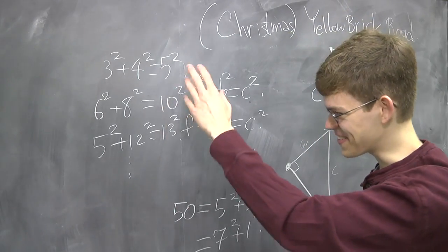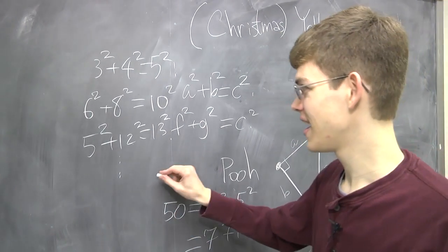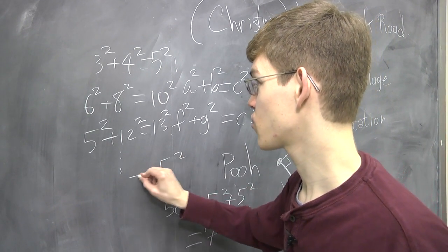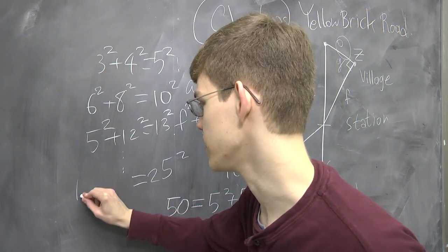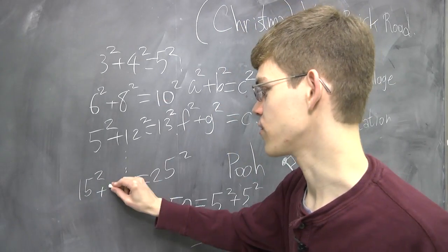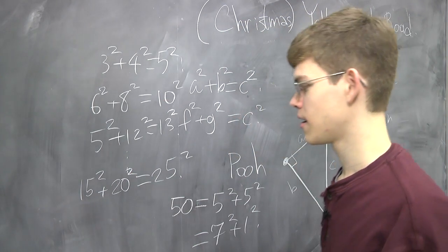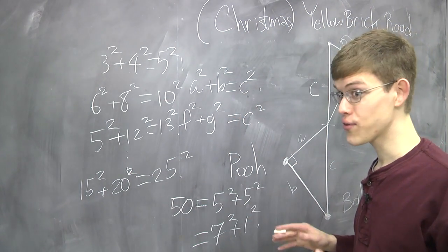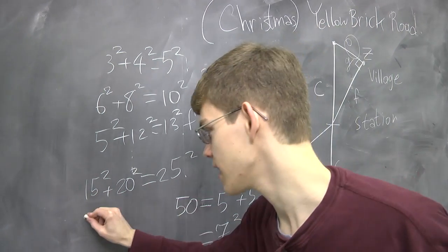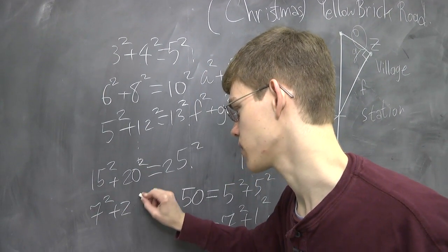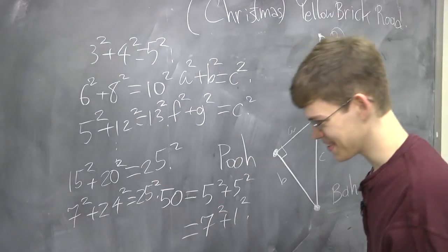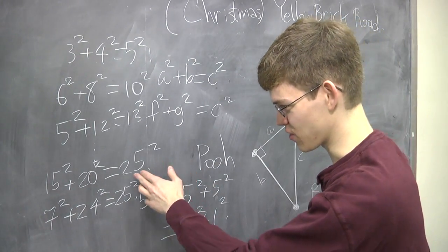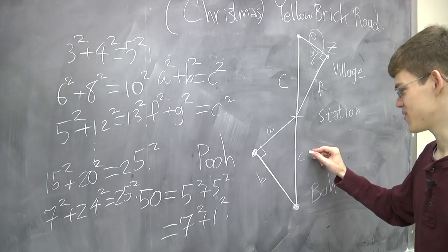And so by trial and error, you can eventually arrive at twenty-five squared, which is just, you multiply all these bases by five. Three times five is fifteen. Four times five is twenty. And it turns out that twenty-five squared can actually be written as seven squared plus twenty-four squared. I didn't know that until I checked it on my calculator. So this turns out to be the shortest number that will work for this C.